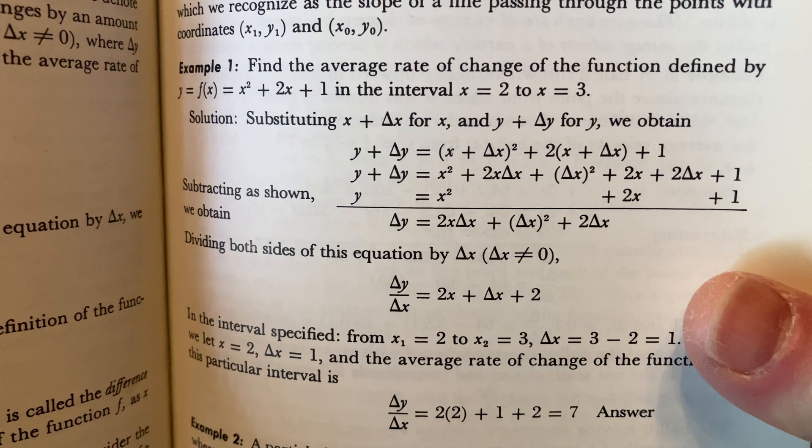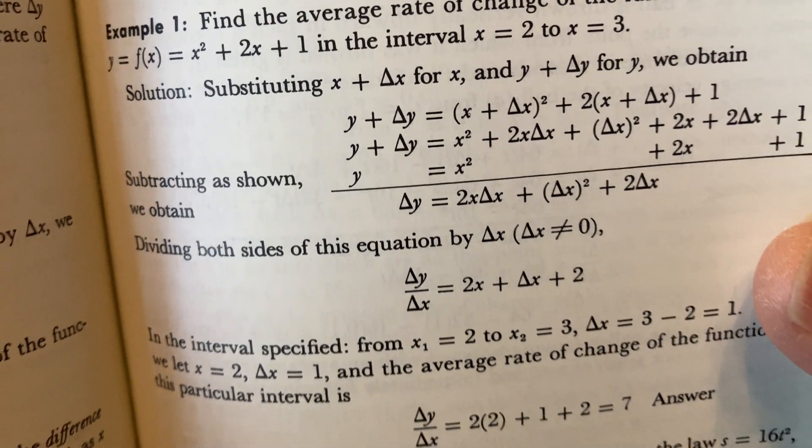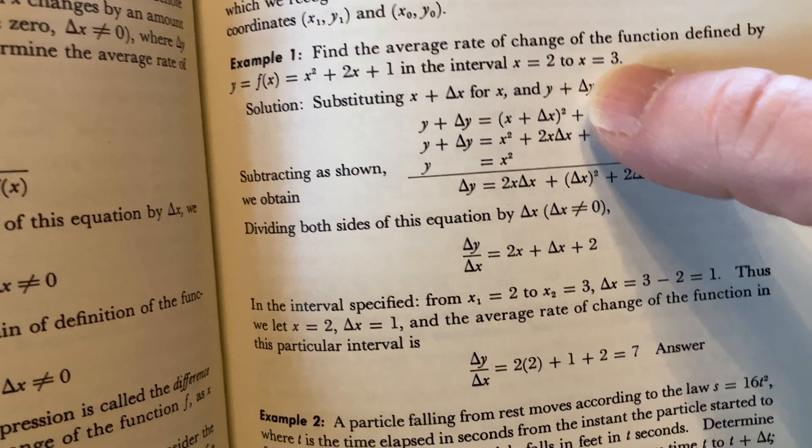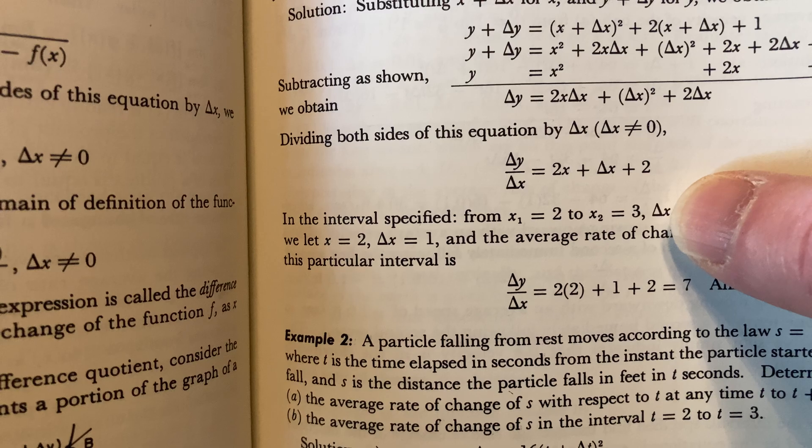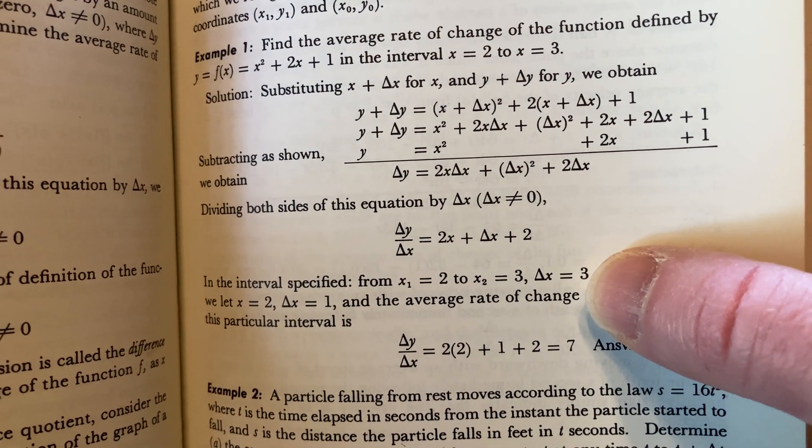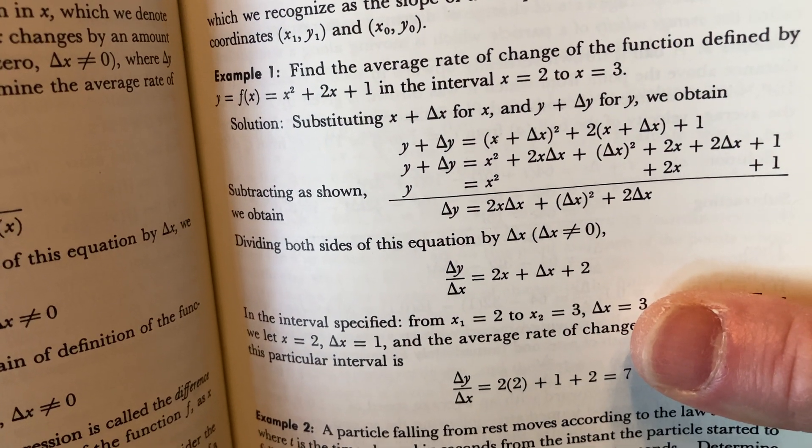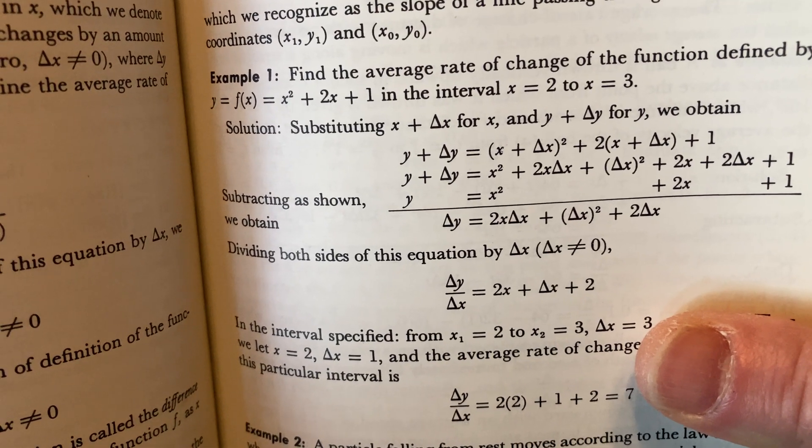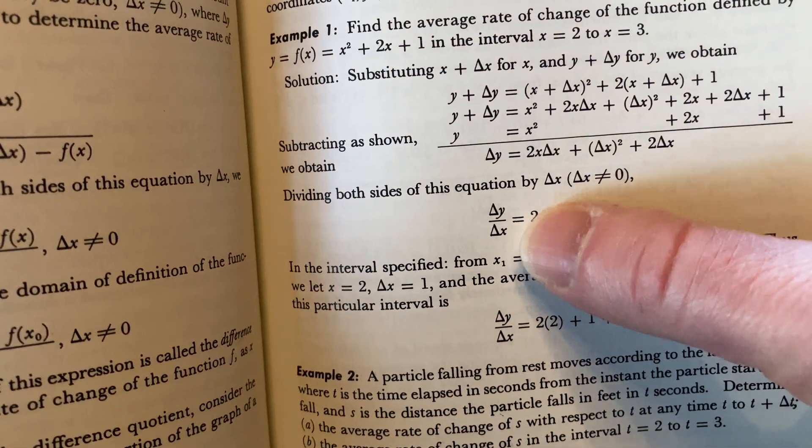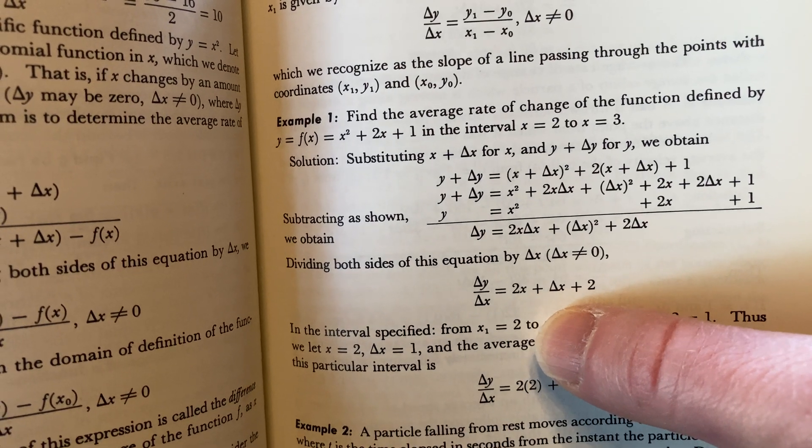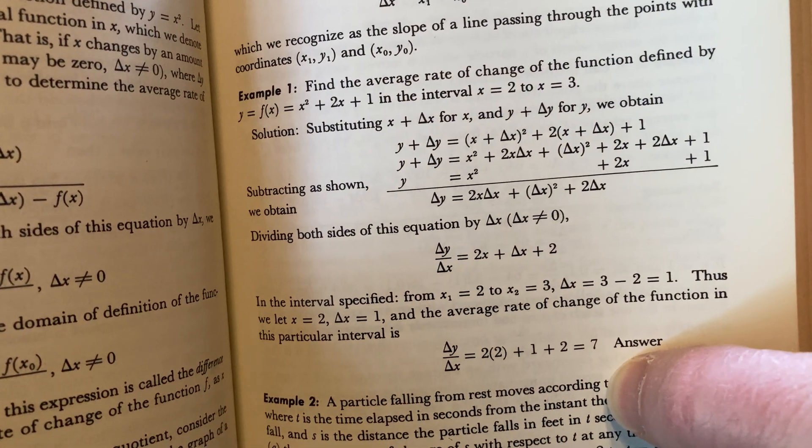Here's an example. Find the average rate of change of the function defined by, and they give you a quadratic really easy. In the interval of 2 to 3, it's really easy numbers too because when you subtract these you're going to get 1. Yeah, pretty simple. That's going to be delta x is just 1. So it's like not tough. Yeah, they do it a little bit differently. They say substituting x plus delta x for x and y plus delta y for y we obtain. And then they subtract and they get delta y. Divide both sides, they get delta y over delta x. Pretty cool. And then the specified interval, they plug in the numbers and they get 7.